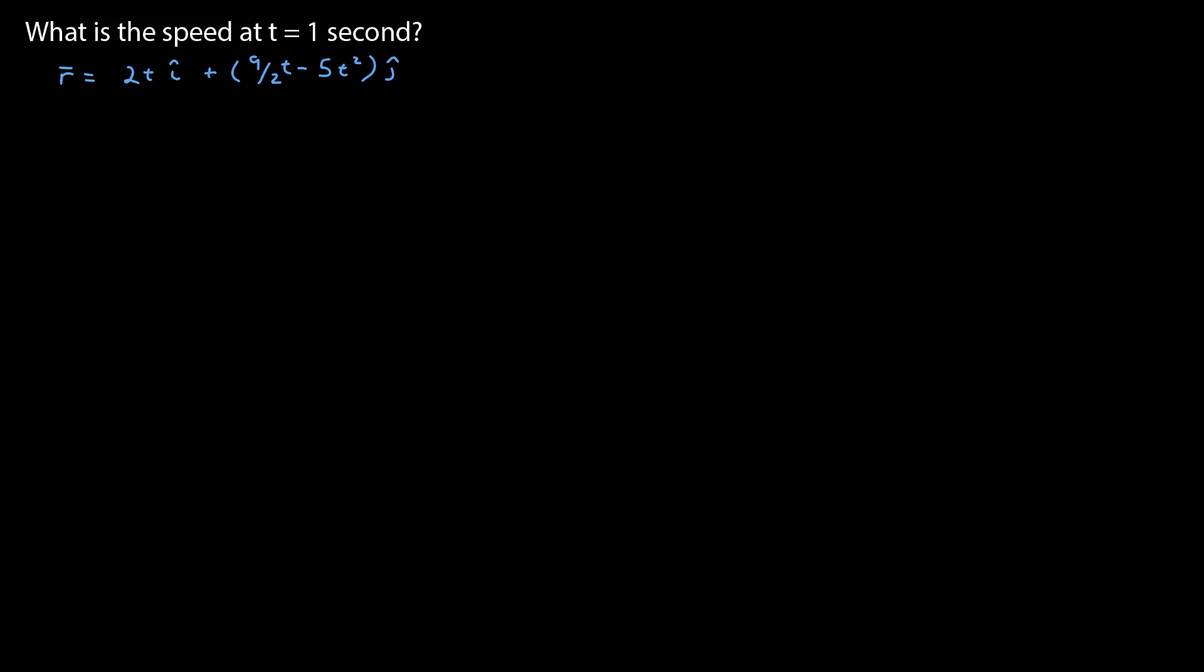In the final minute, let's do a typical example of the type of question you might see. Here is the position function, it could be anything, and you're asked, what is the speed at one second? We know that position is the derivative of the velocity, and we can calculate that derivative, which we've already done. The derivative of 2t is 2, 9 halves t minus 5t squared is 9 halves minus 10t. And now we can calculate the velocity at t is equal to one second, which is 2 i hat minus 11j hat. That's just substituting 1 in for t. And now the speed is the magnitude of the velocity, so I need to find the magnitude of that vector, which is 2 squared 4 plus 11 halves squared, which is 121 fourths. My calculator tells me that's 5.85 meters per second.